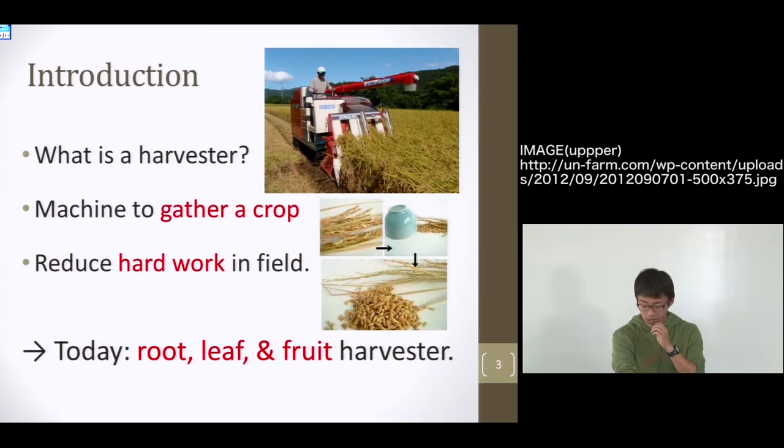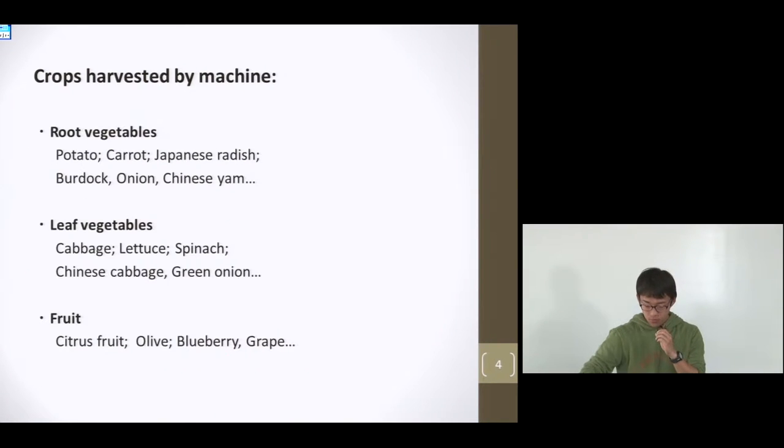There are many kinds of harvesting in the world, so I'm going to introduce some of it. In my presentation, I will show three types of harvests: root, leaf, and fruit harvests. Now, I would like to show you what crops could be harvested by machine and which crops are classified with each category.